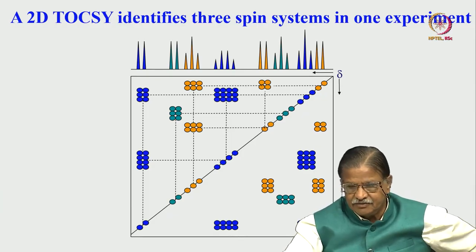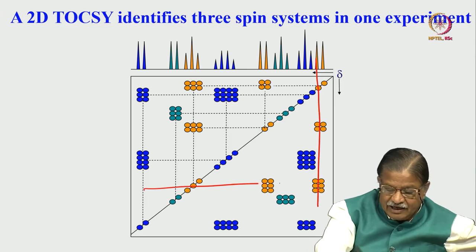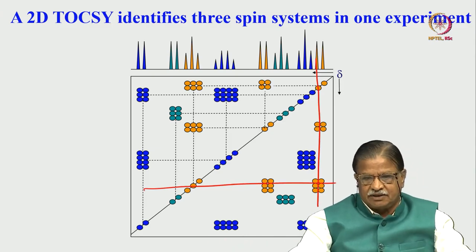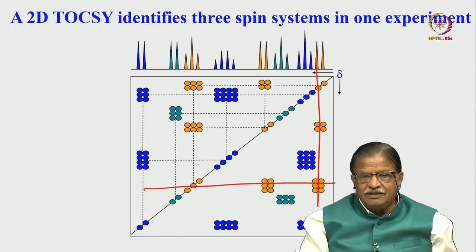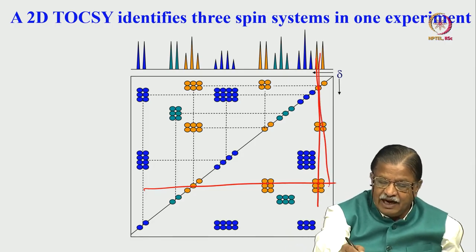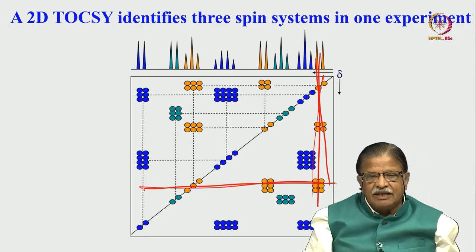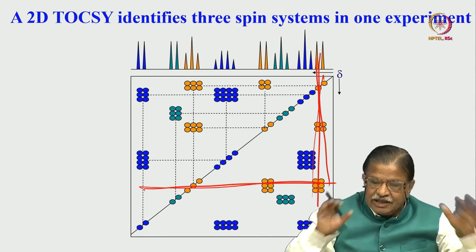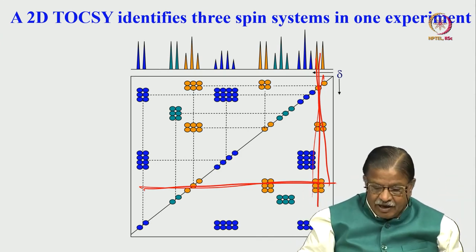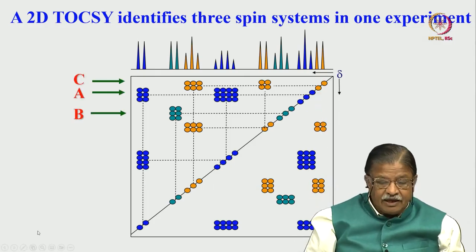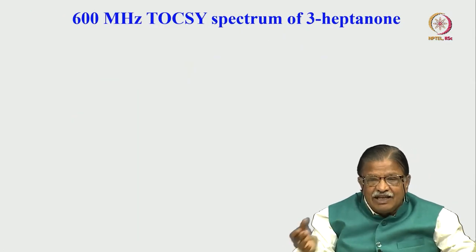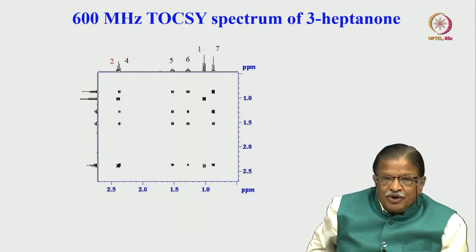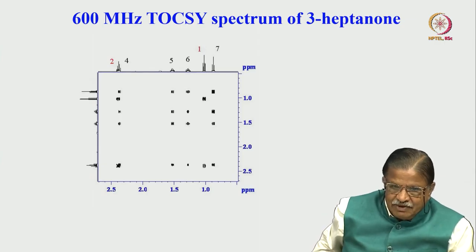Just go vertically or horizontally — you can identify all the coupled partners in one experiment. This is the advantage over COSY, where you have to go in a systematic ladder manner. In TOCSY, simply drawing a vertical line identifies all the coupled partners. Or going horizontally also tells you the same. You can identify all the coupled partners in one simple TOCSY experiment.